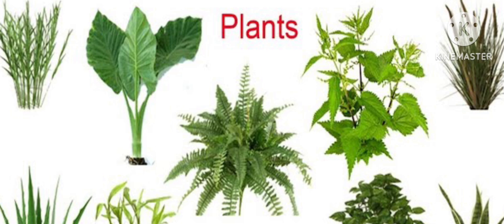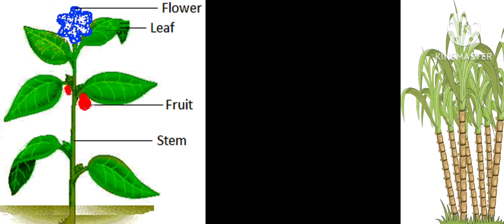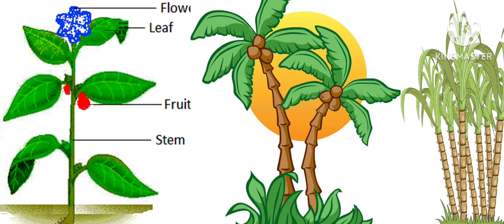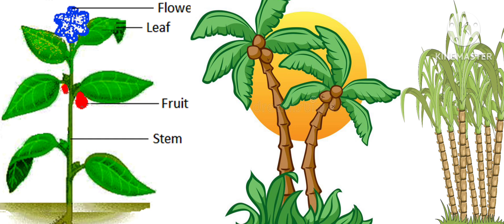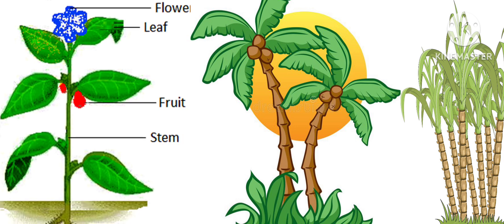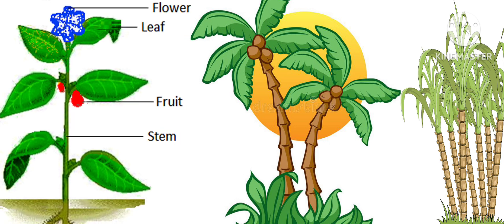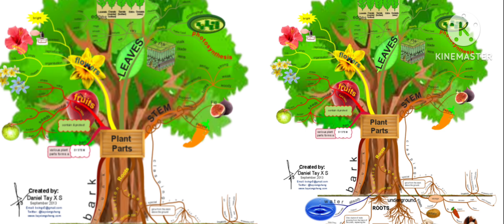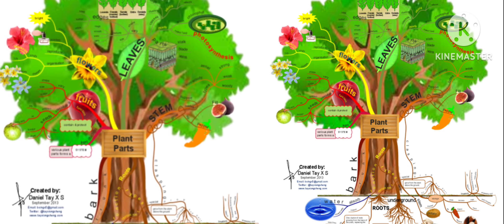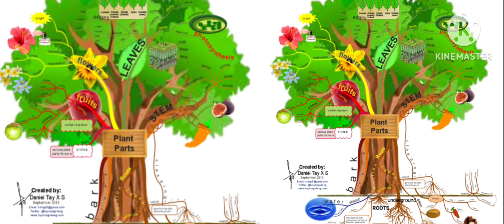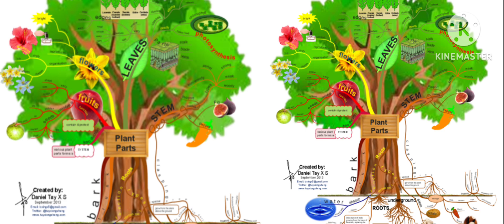Different parts of the plants are obtained for different things which are useful to us. A plant gives us food, oil, wood, cotton, rubber, medicine, soap, and paper.